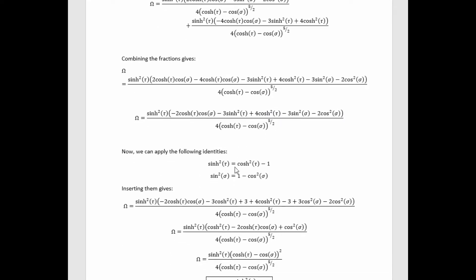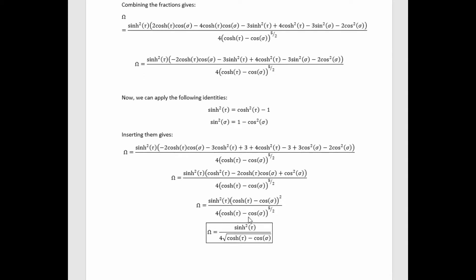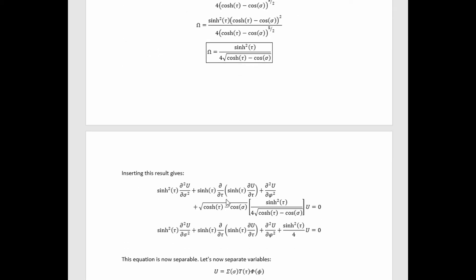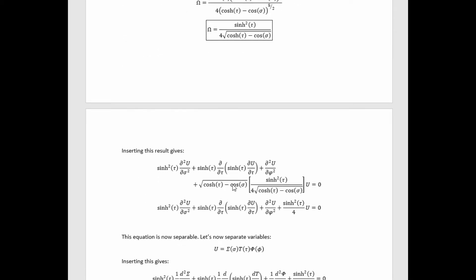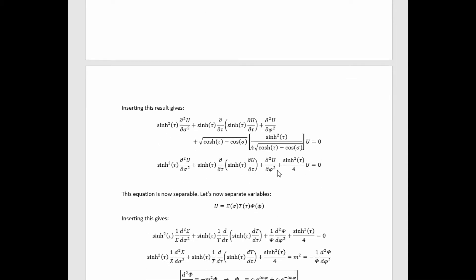Then we can apply these two trig identities giving this. And then combining like terms simplifies it down quite a lot. Then we can unsquare it to get this. So then we finally find after canceling what we can between the numerator and denominator that we have this value for omega. We can then insert this back into the equation and we see we've got a nice cancellation between these square roots. And we arrive at this separable equation.